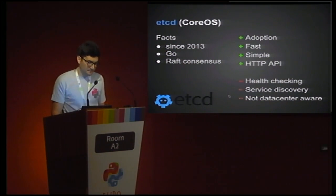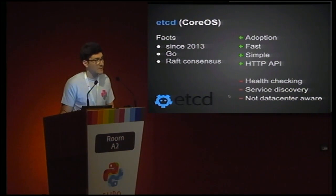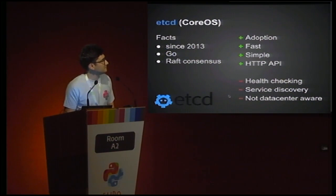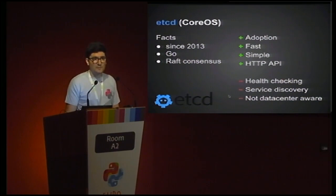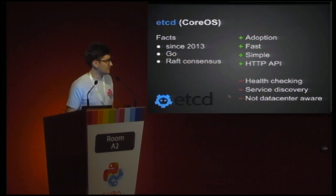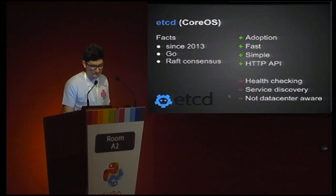Next is ETCD, from the CoreOS guys. It's a recent project written in Go, uses the Raft consensus algorithm, and has good adoption — it's used in Kubernetes. It provides an HTTP API for queries and registration, making it simple to implement and configure. Like ZooKeeper, it doesn't provide service discovery per se, but we'll use the file system hierarchy to achieve it. It's not data center-aware and doesn't provide health checking of registered services.